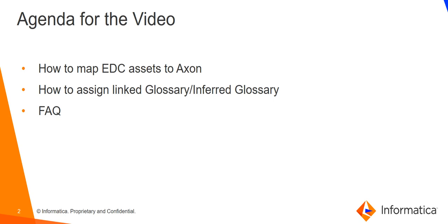Before going ahead, let's recap what we discussed in the Axon EDC integration video Part 1. In that video we discussed that we have to map EDC assets to Axon assets in order to avail the data governance facilities. If you want to govern your data, you have to map whatever data is present in EDC to whatever data is present in Axon — only then you can govern your data using Axon data governance.